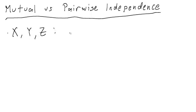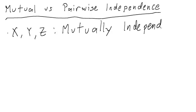We'll say that three random variables, x, y, and z, are mutually independent if we can write the joint distribution.